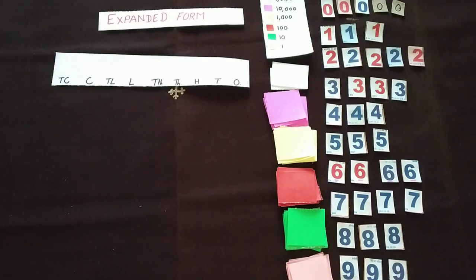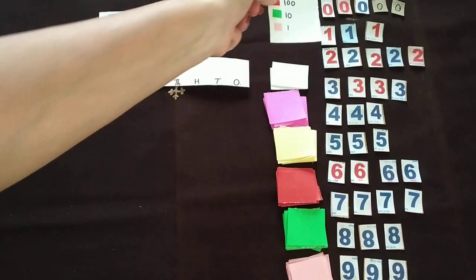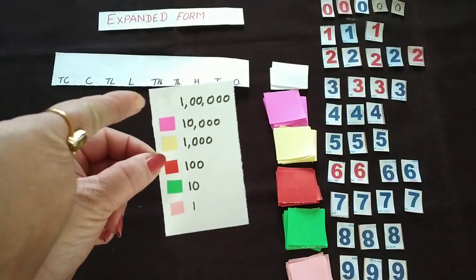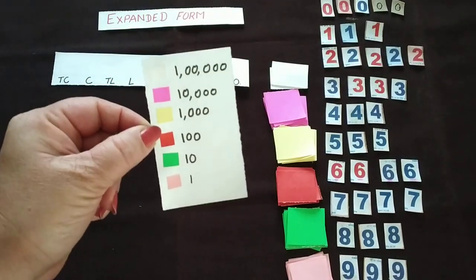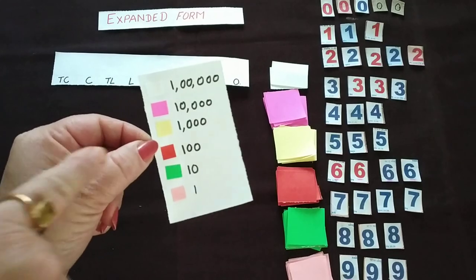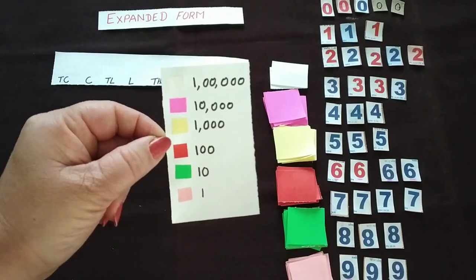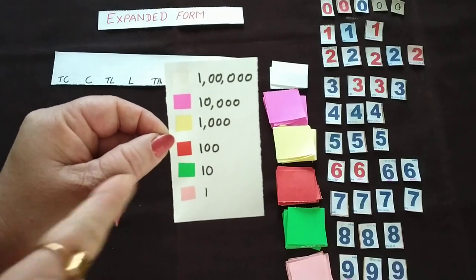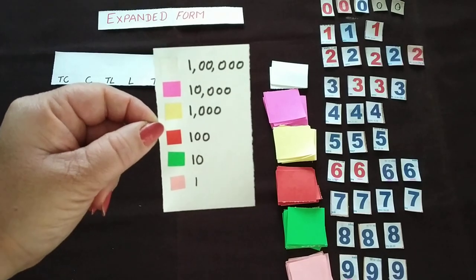So here I have used an index. You can see this white color is for 1 lakh, pink color 10,000, light yellow color 1,000, red 100, green means 10, and pink means 1.